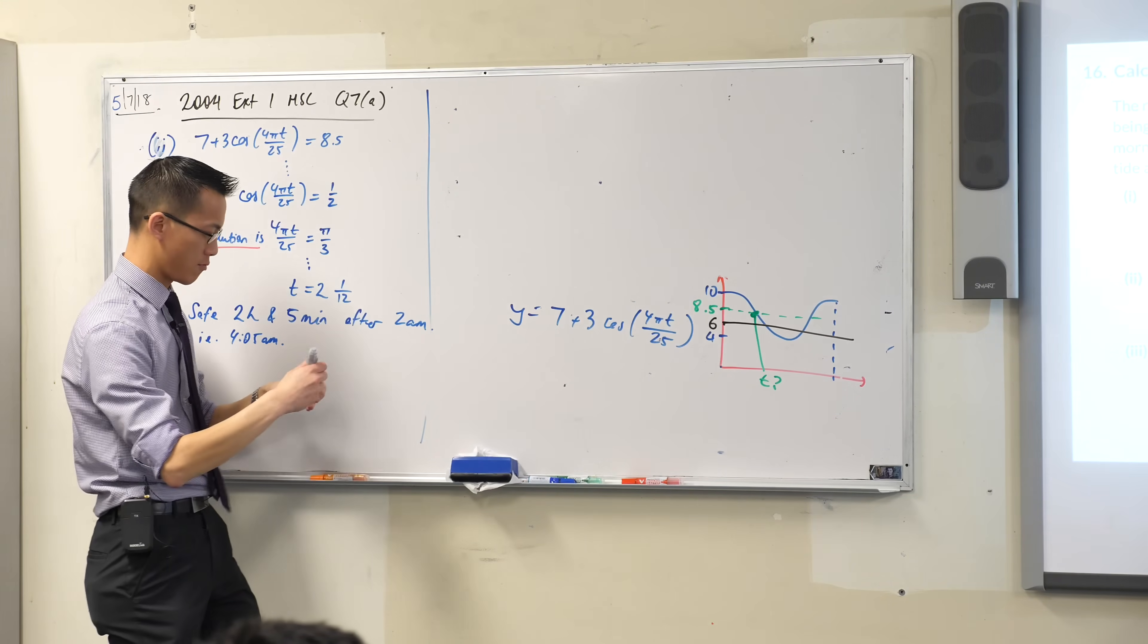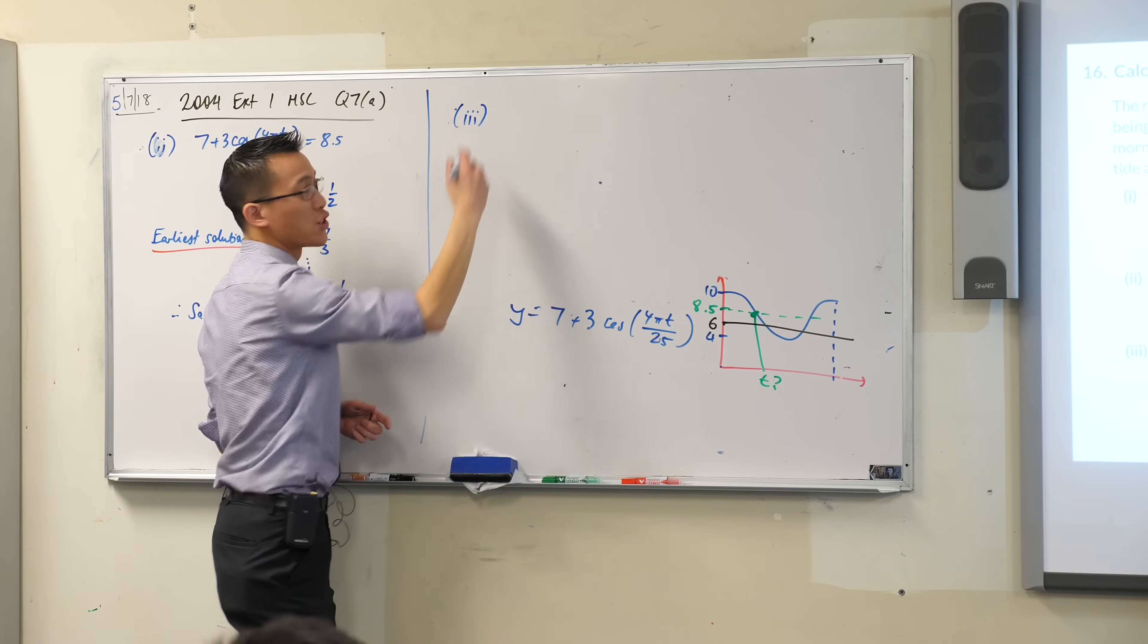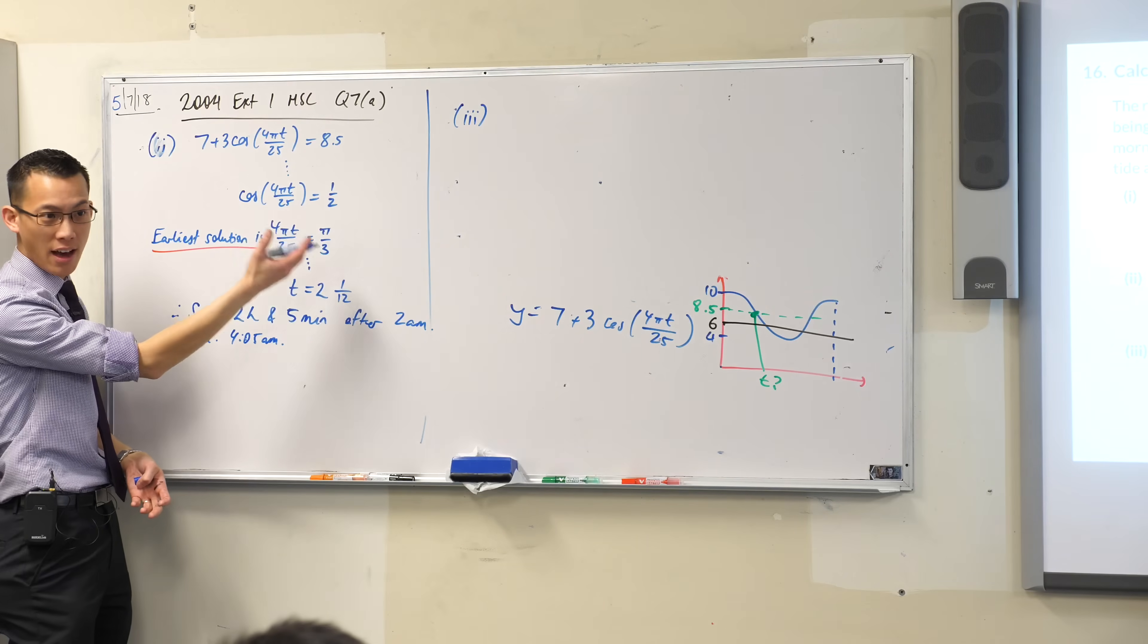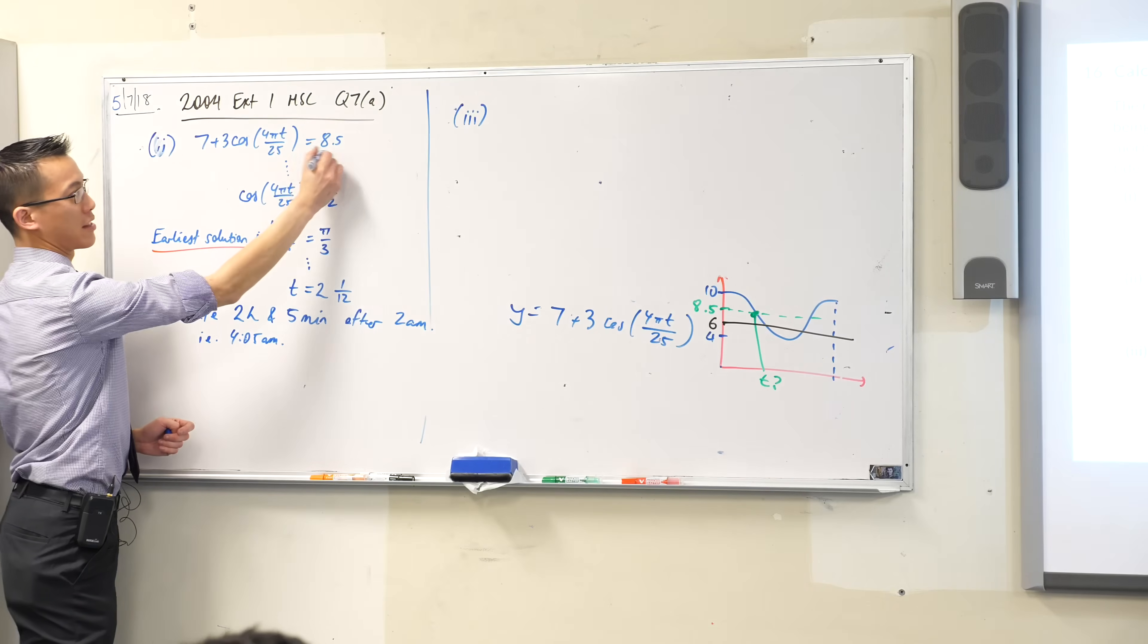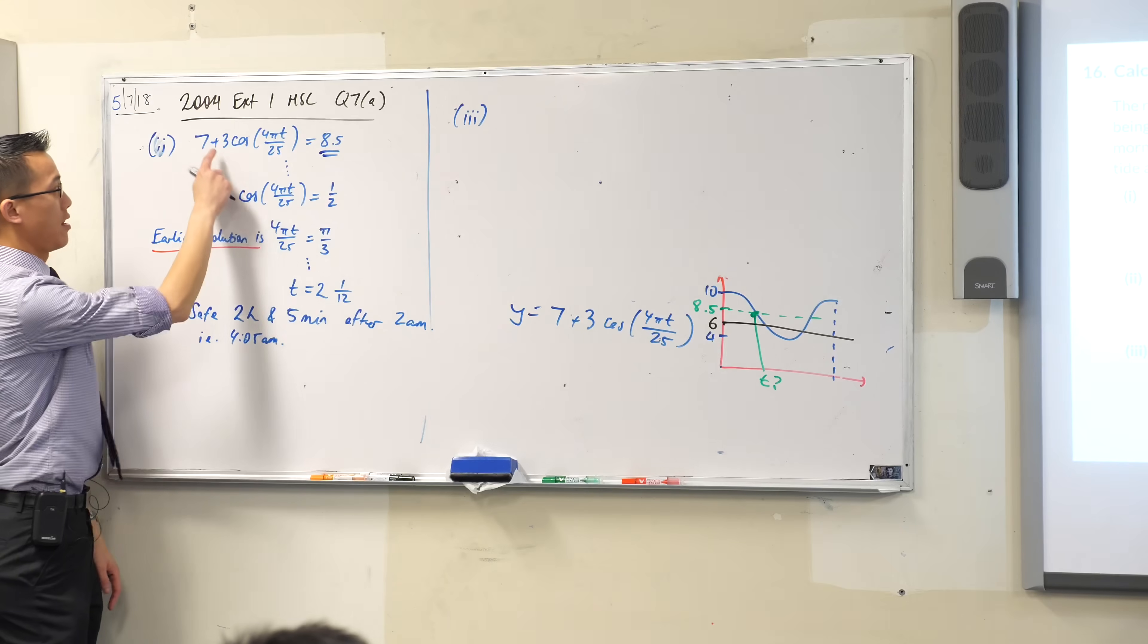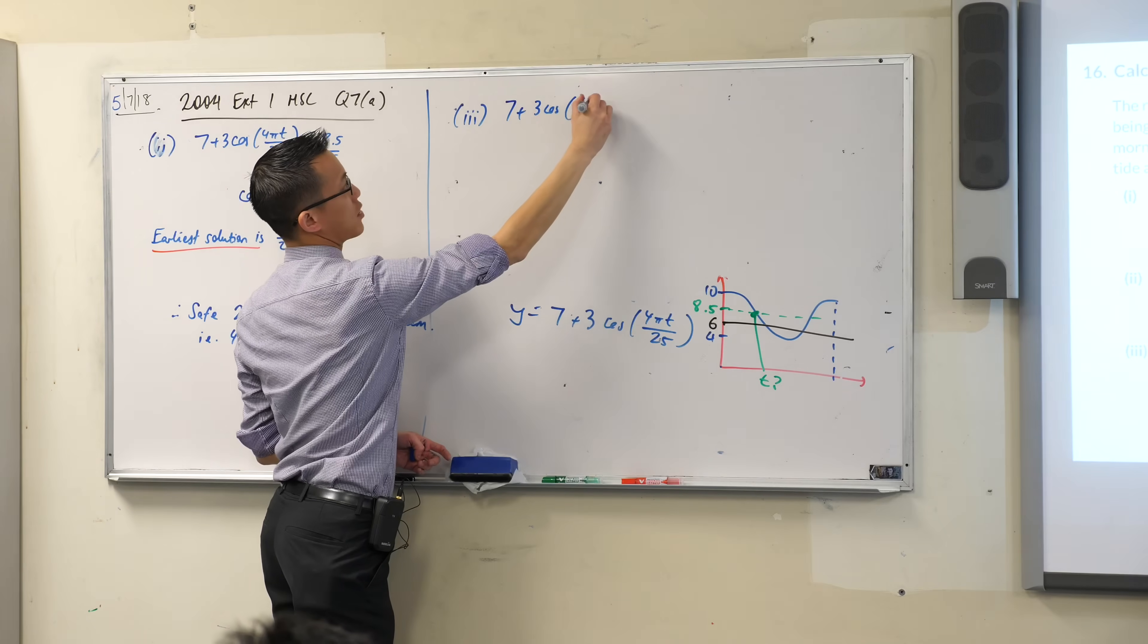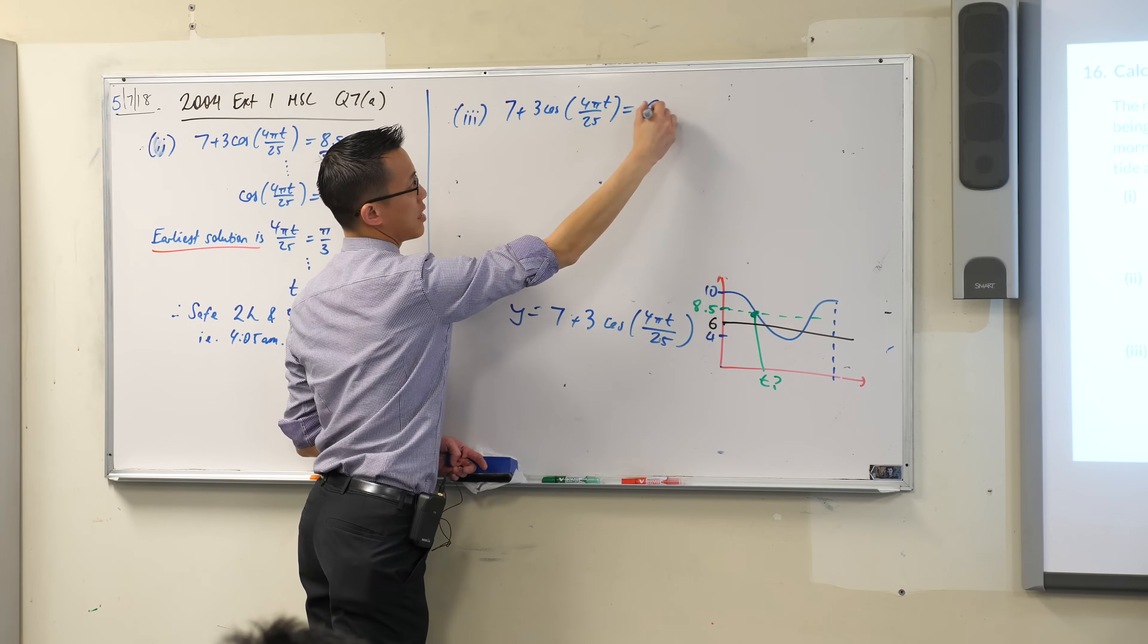Part three. Let's start this out. Safe water depth is six meters. So just like I did before, I'm going to go ahead and find when is the water at the wharf going to be that six meters, just like I worked it out for when it's going to be 8.5. Now it's going to start exactly the same way: 7 plus 3 cos(4πt/25) equals 6. I'm going to write that down but then I'm going to skip forward a little bit because I think you guys can come up with this answer.